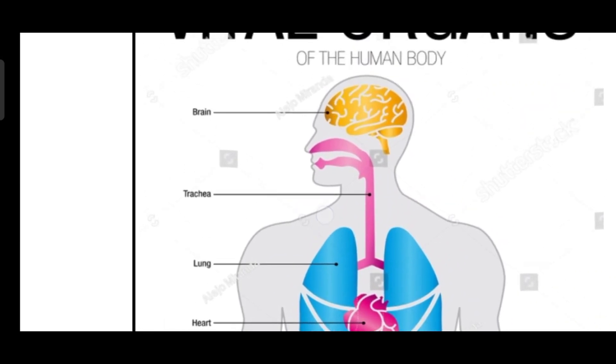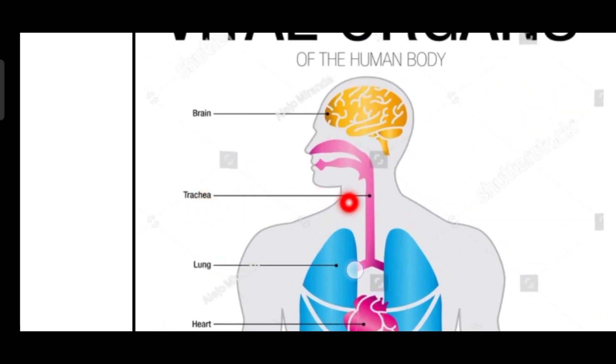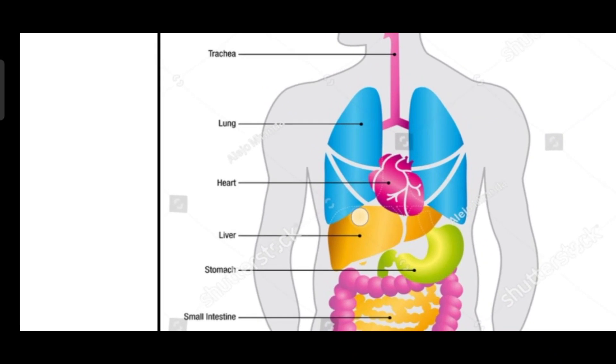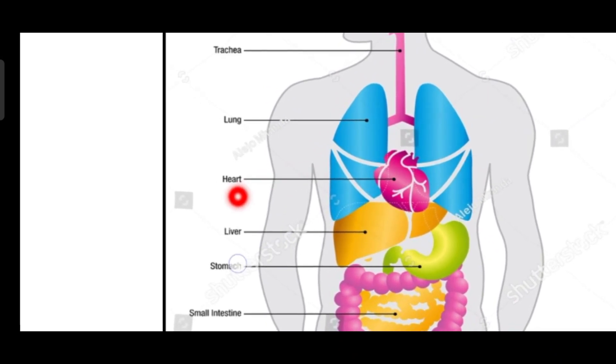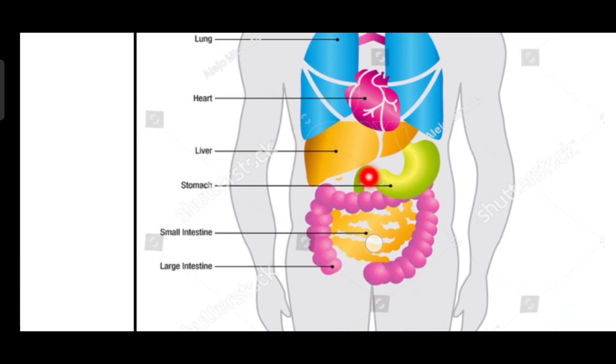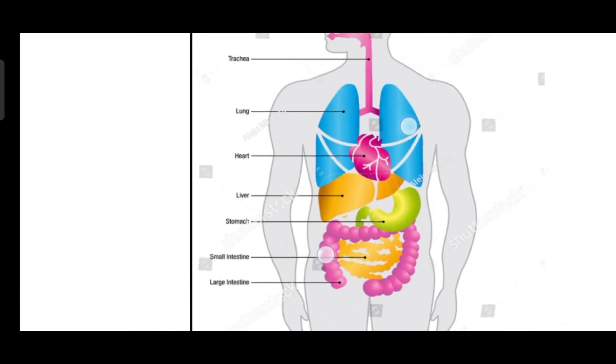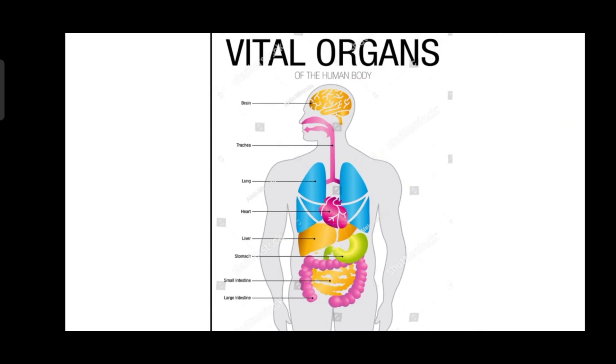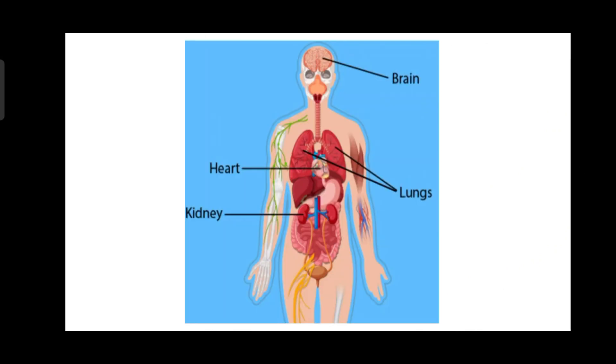The first vital organ is the brain, next is the trachea, next are both lungs, heart, liver, stomach, small intestine, and the large intestine. So those are the vital organs of the human body. Next, we come to the main vital organs.